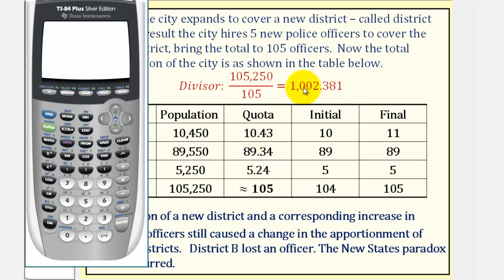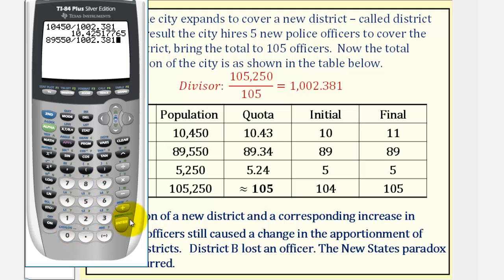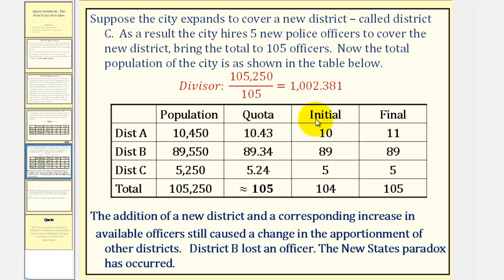We take the population of each district and divide by the new divisor. 10,450 divided by 1,002.381 gives a quota of approximately 10.43 for district A. For district B, we have a quota of approximately 89.34. And for district C, the new district, we have a quota of approximately 5.24. For the initial allocation, or lower quota, we remove the decimal part, giving us 10, 89, and 5.